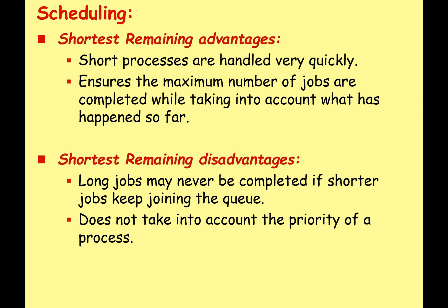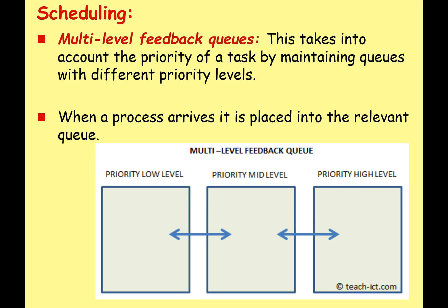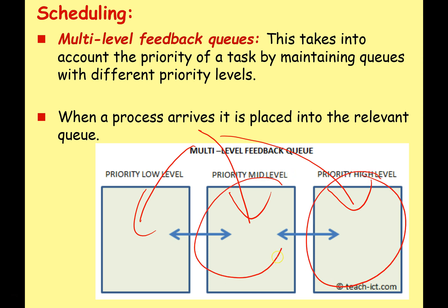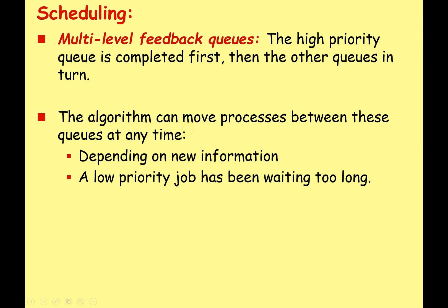A more advanced algorithm is multi-level feedback queues. This takes into account the priority or importance of a task by maintaining queues with different priority levels. When a process arrives it is placed into the relevant queue — it can be assigned low, mid, or high priority. High-level tasks are worked through first, then mid-level, then low-level.